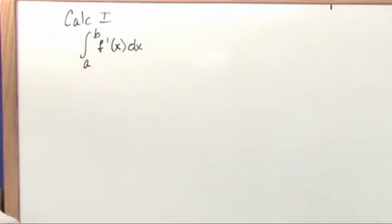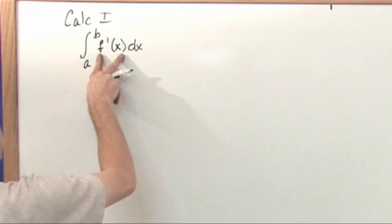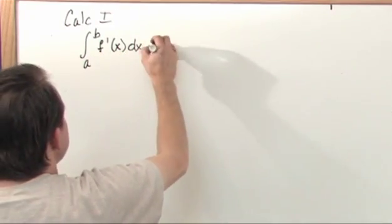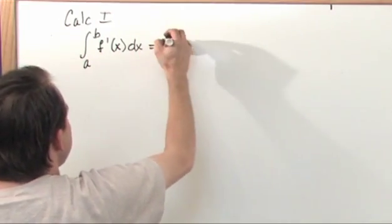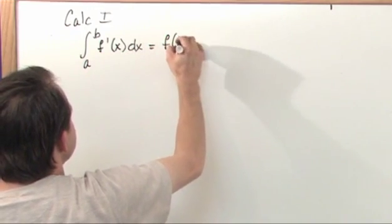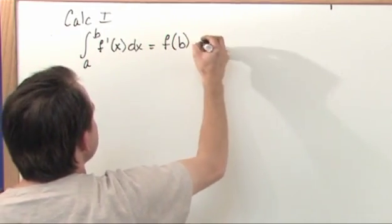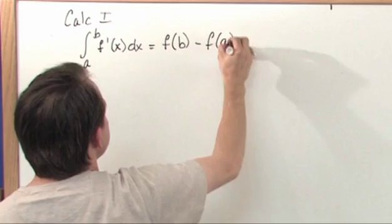Then what you're going to get back when you actually do this, you have to evaluate the integral, you get a function back, you evaluate it at the limit B, and then you subtract off evaluating at the limit A.